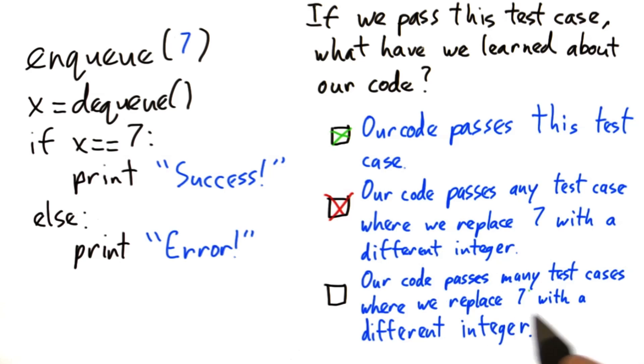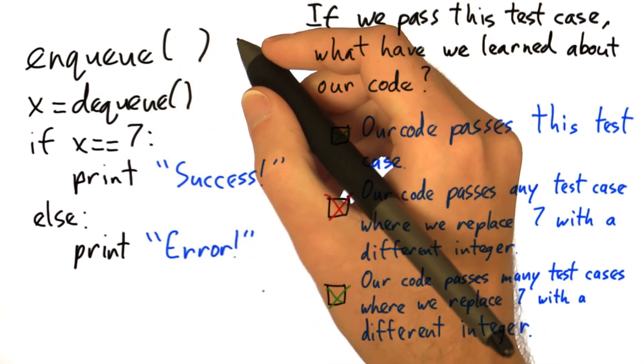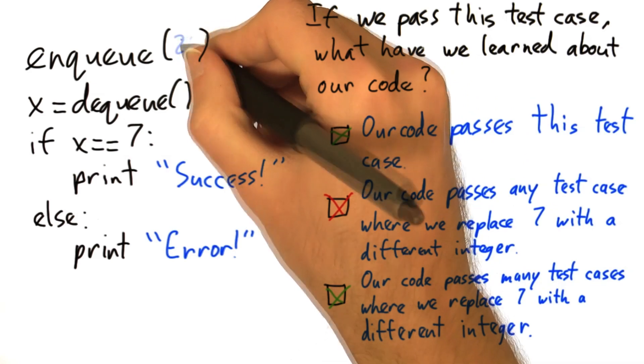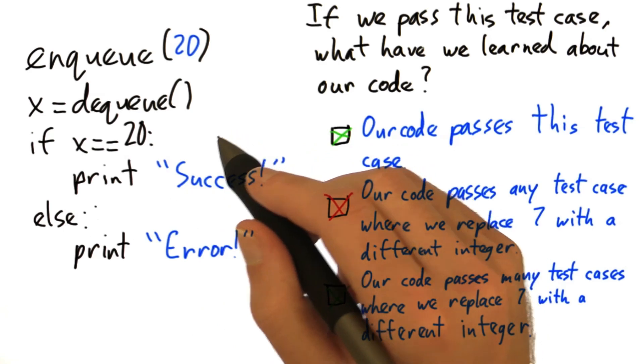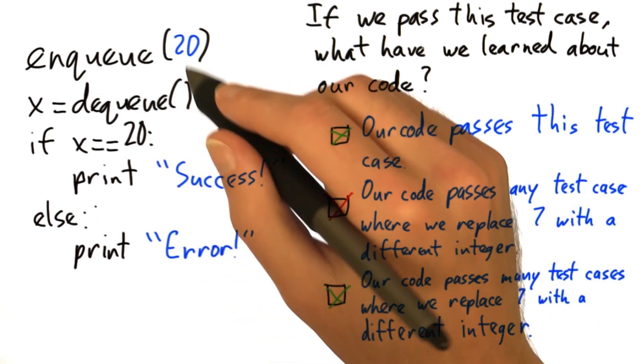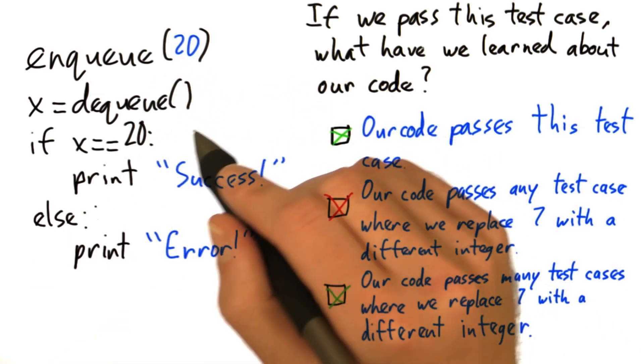Now, our code passes many test cases where we replace 7 with a different integer. This is true. If we were to replace 7 with, say, 20 and replace it down here as well, then yes, this should behave essentially the same. And it should behave essentially the same for many, many integers.